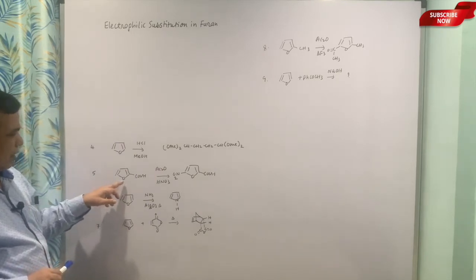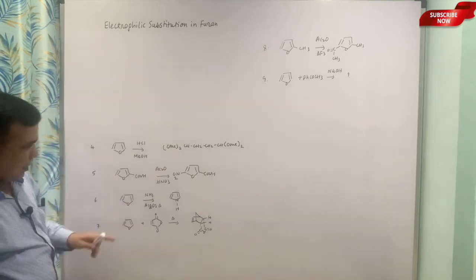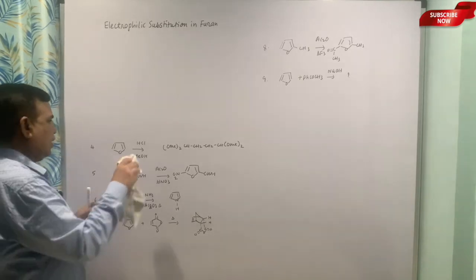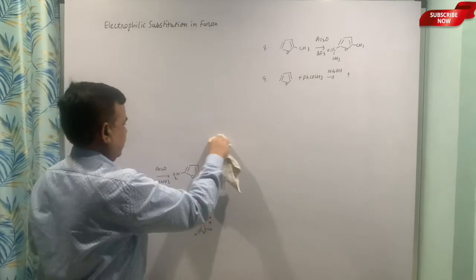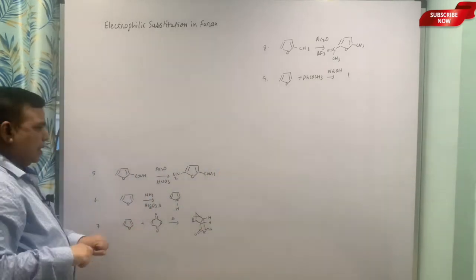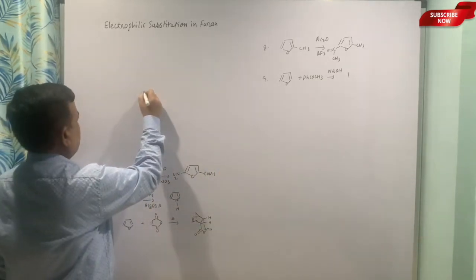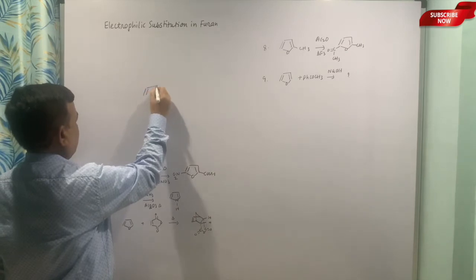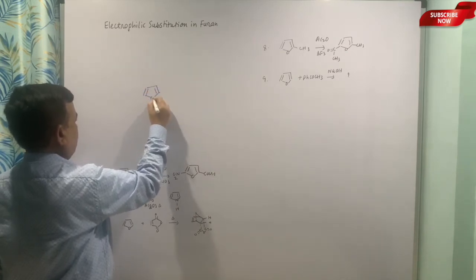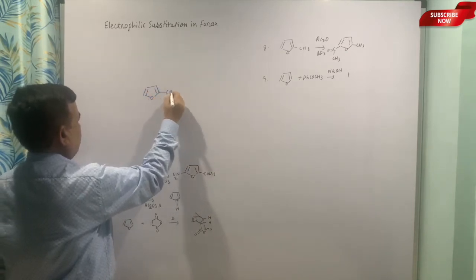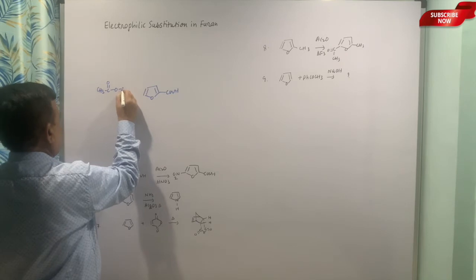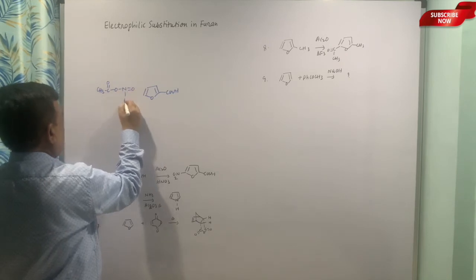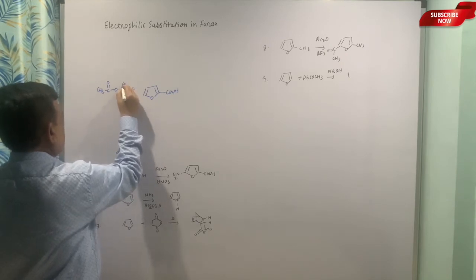The next one is: this acid is treated with acetyl nitrate and HNO3. We have seen how acetyl nitrate is formed in C2. So this is COOH, this is one part, and then we know that this combination gives rise to acetyl nitrate.